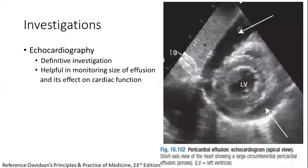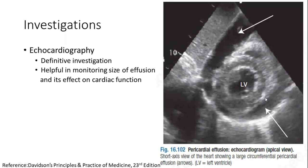For diagnosis of pericardial effusion, echocardiography is the definitive investigation. It helps quantify the fluid, identify whether the fluid is loculated, monitor the size of the effusion and its effect on cardiac function, and identify the optimal site for pericardial aspiration. In the echocardiography image shown, you can see the left ventricular cavity with an enlarged pericardial space indicated by the arrow — normally this space is very narrow, but here there is a large amount of fluid, confirming the diagnosis.